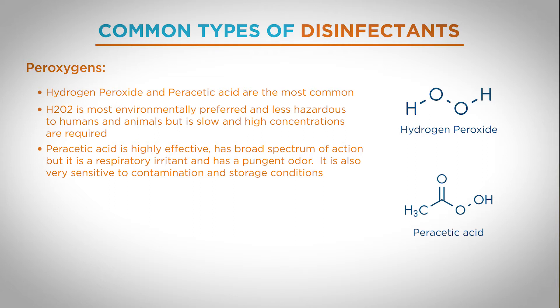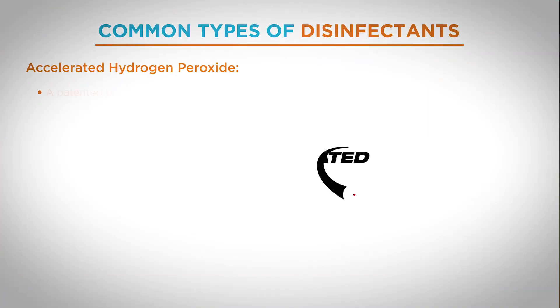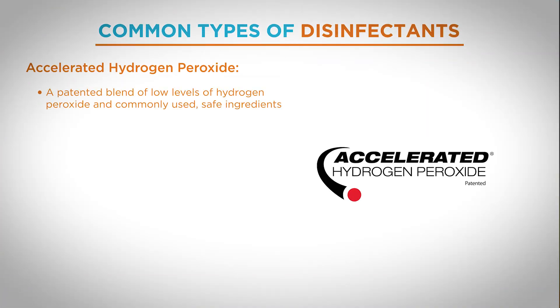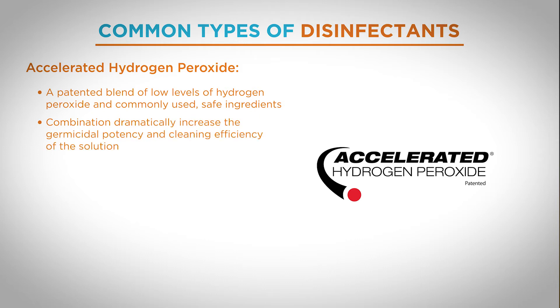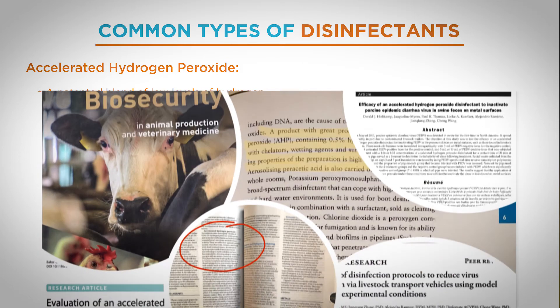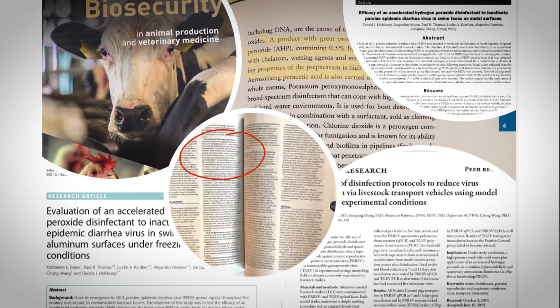Within the class of peroxigens, we have what we have trademarked as accelerated hydrogen peroxide. This is a patented combination of non-hazardous ingredients that results in very high efficacy and broad spectrum of activity. The combination dramatically increases the activity of hydrogen peroxide as an active, and it has been extensively validated by third-party studies. In fact, you can find accelerated hydrogen peroxide as an entry in the disinfectant chapters of the Merck Veterinary Manual, a book that you are probably familiar with.